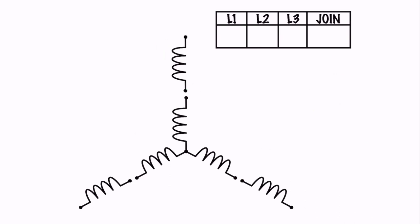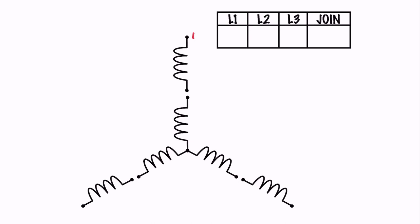The next one — the higher voltage connection — is super easy. Higher voltages in series add together. If each one of these windings is rated for 230 volts, then 230 plus 230 gives us 460. We number the leads the same way, and we just connect them in series. So we go boop, boop, boop — those are connected. Then we connect our line one, line two, and line three.